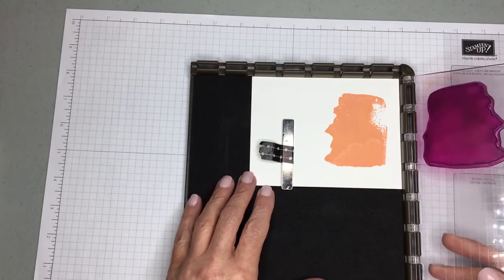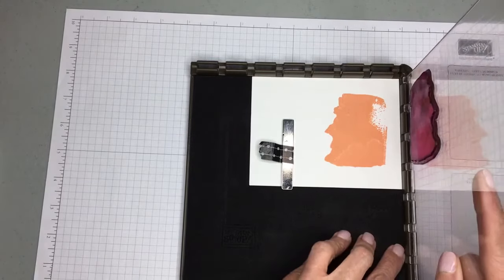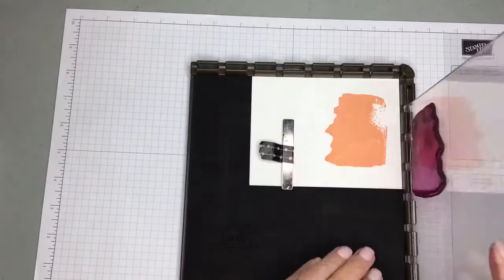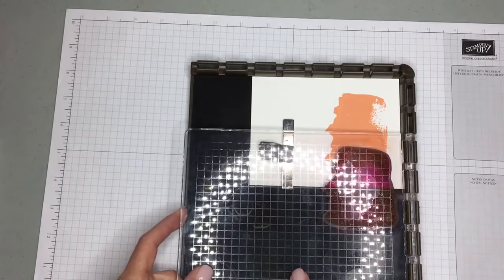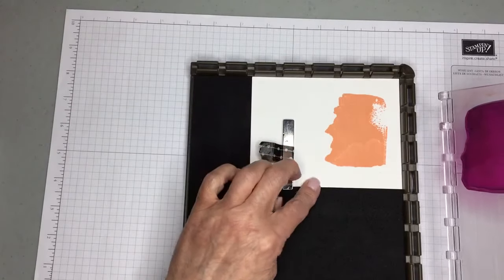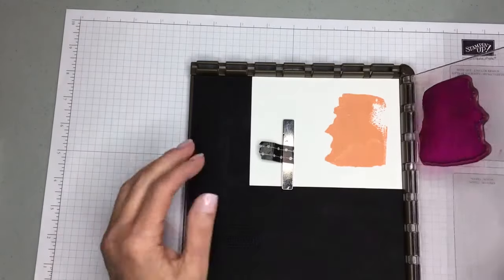Now one of the benefits of the Stamparatus is the fact that you have the hinge and you're able to bring your plate up, move it down a hinge, re-stamp, and then continue to do that. Especially like with a sentiment, being able to bring it down a couple of different times is a big benefit, or if you're doing some kind of a banner.